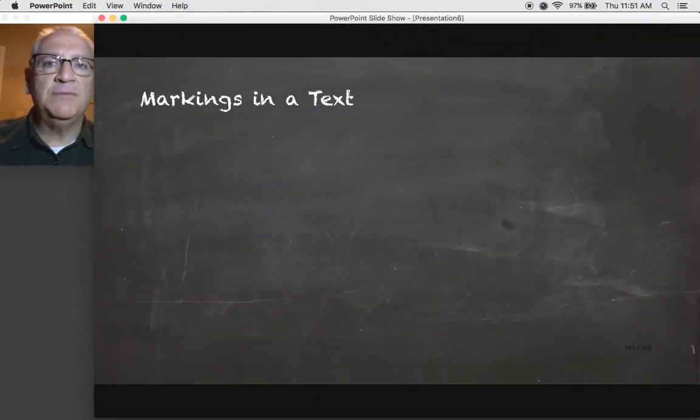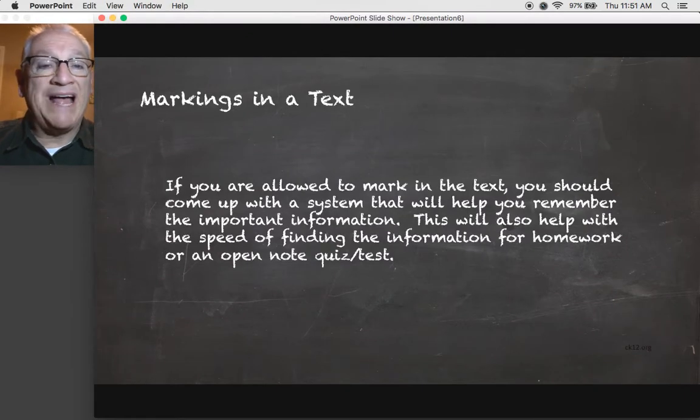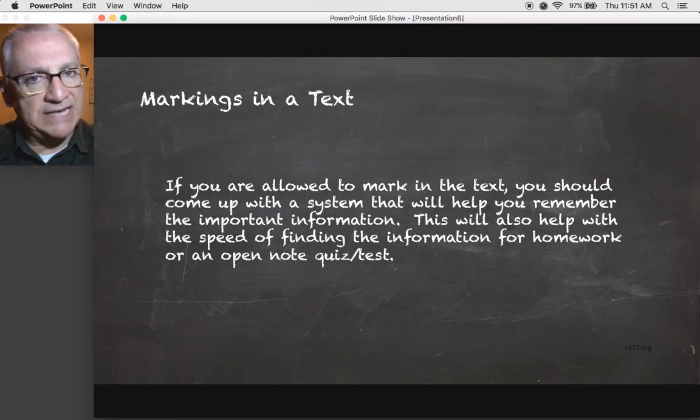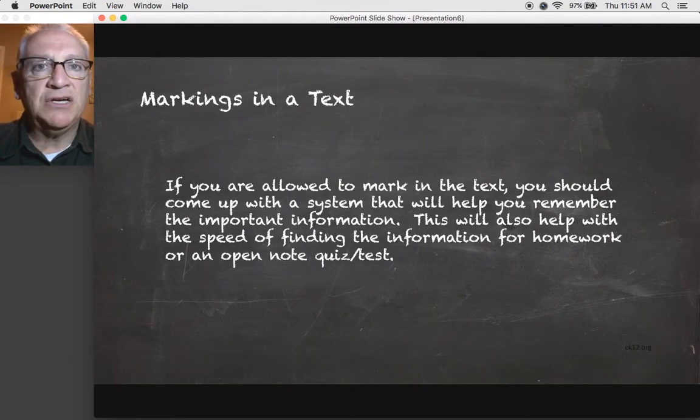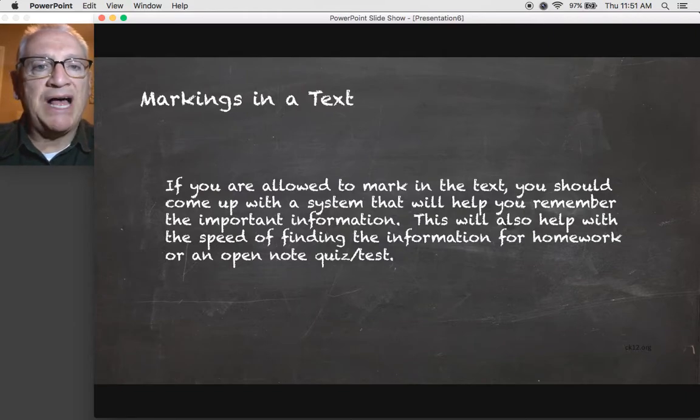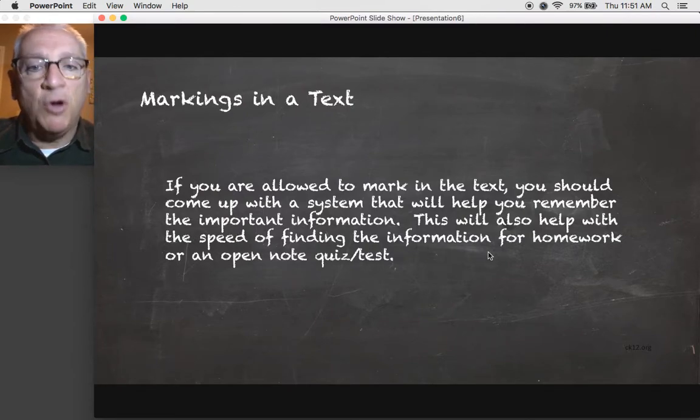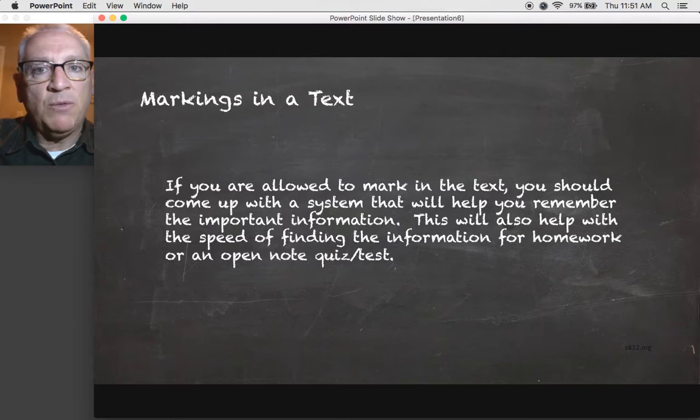Now, some of the other things that we talked about before, markings in the text. If you are allowed to mark in your text, you should come up with a system that will help you remember the important information. Now, if you're not able to mark in your text, you'll have to take notes on the text and then you can use your highlighting on that. At our particular school, we hand the people the text and a three-ring binder and then they're able to highlight that. This will keep the information speedily so that you can find the information for homework. And of course, if you take an open note test or quiz, you can find things quicker and easier that way as well.